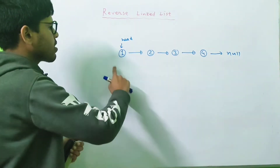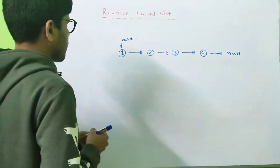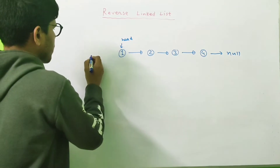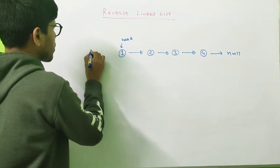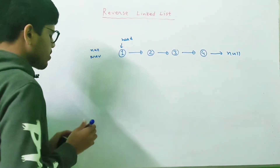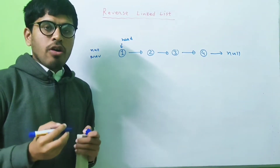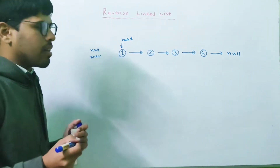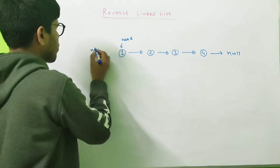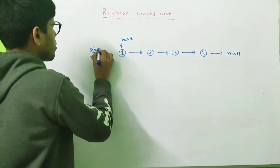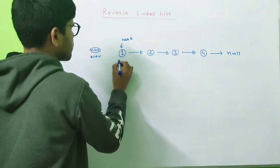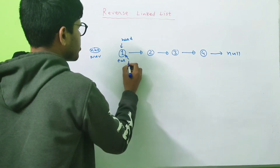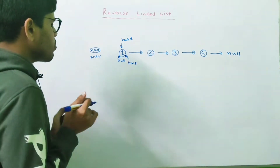We're given the head of this linked list. We're going to use three pointers to solve this problem. The prev pointer will point to null initially. The prev pointer always points to the head of the reversed linked list — at this point our reversed linked list is null, so prev points to null. The current pointer and the temp pointer will both point to the head node initially.